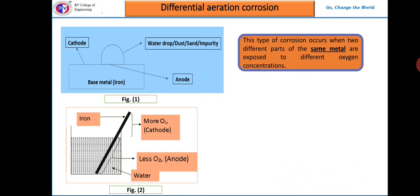In a second example, an iron rod is dipped in a beaker containing water. The iron rod inside the water, having less oxygen concentration, acts as the anode, whereas the metal exposed to air and not covered by water, having more oxygen concentration, acts as the cathode. In both cases, formation of anode and cathode in the presence of electrolytes results in an electrochemical cell.